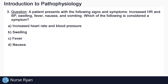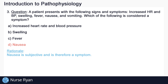Moving on to question number three. A patient presents with the following signs and symptoms: increased heart rate and blood pressure, swelling, fever, nausea, and vomiting. Which of the following is considered a symptom? The answer here is D, nausea. Nausea is subjective and is therefore a symptom. Everyone may experience nausea differently, and there is no way to measure how much nausea a given patient is experiencing — it is subjective to that patient.